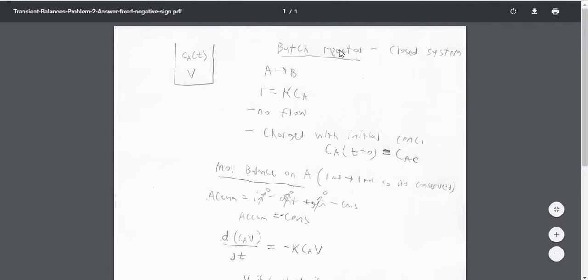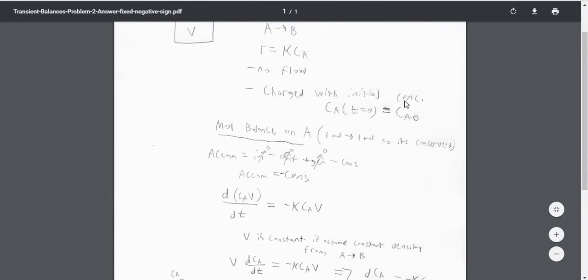Since this is a batch reactor, there's no flow and it's a closed system. A is going to B as said before, and that reaction rate R equals K times Ca. It's charged with an initial concentration at time equals zero of Ca0.